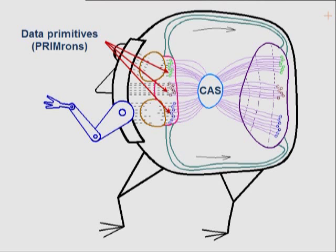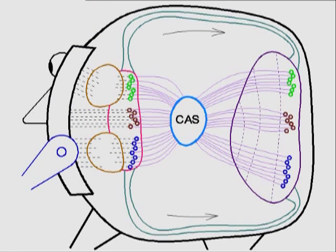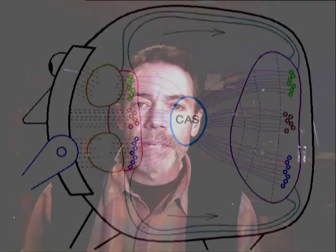Before we proceed, I want to say that I've intentionally made this diagram extremely simplistic so that we don't get dragged down with the details. For instance, I'm intentionally leaving out the senses of hearing and taste, and we know that we have far more primrons than what's shown here. There are a number of other caveats I'll address eventually, but for the time being the objective is to keep the diagram as simple as possible.